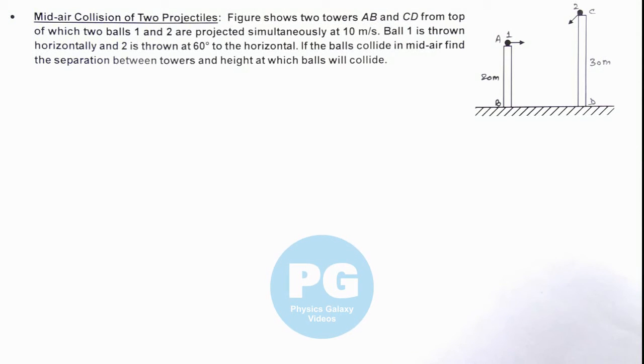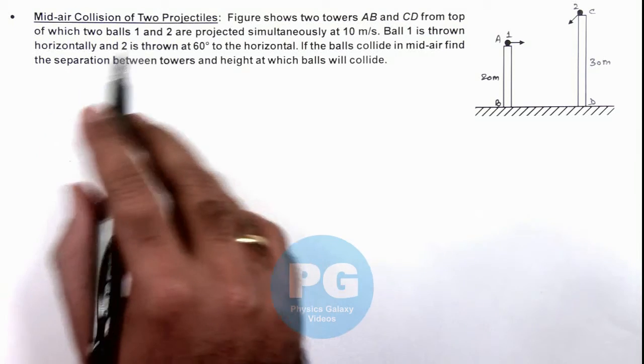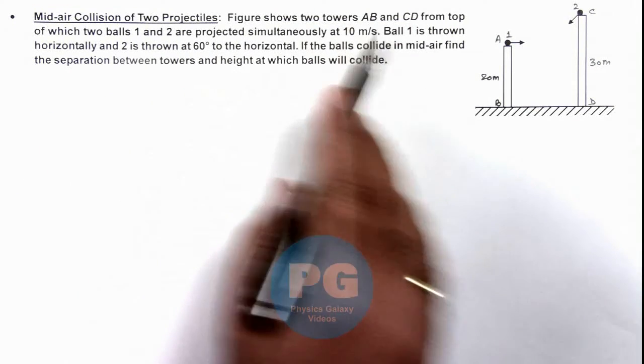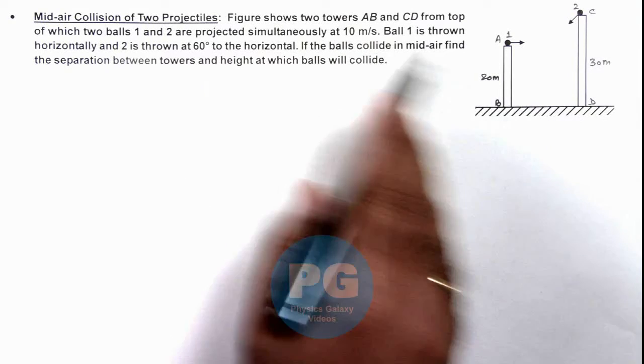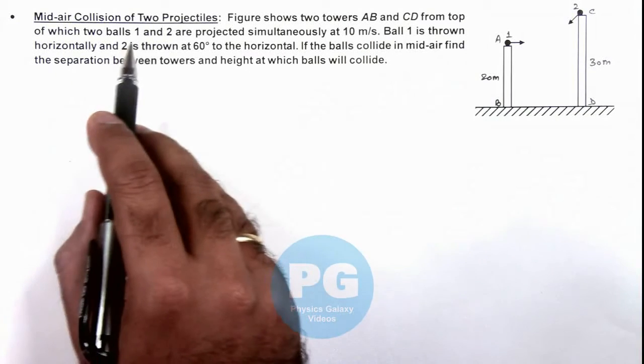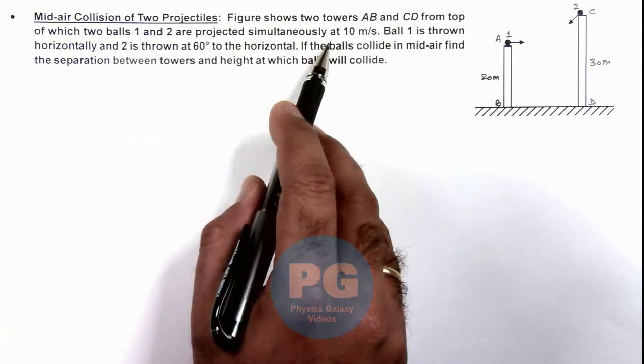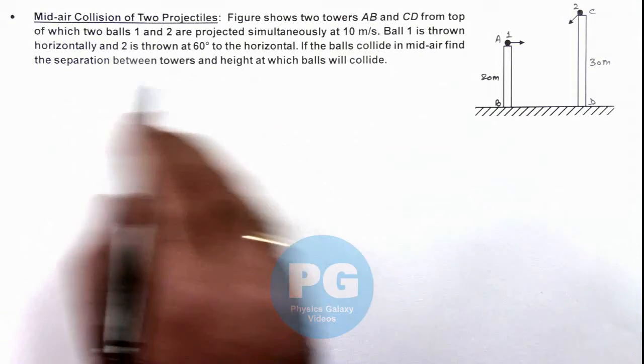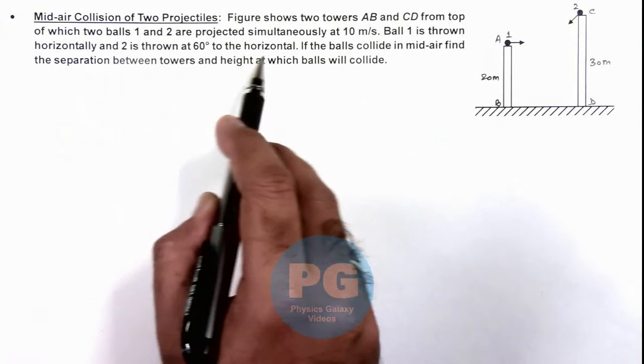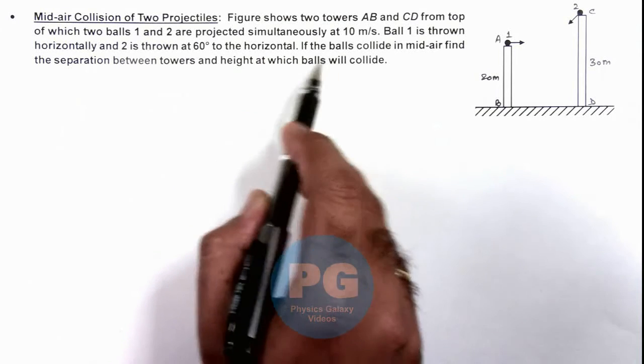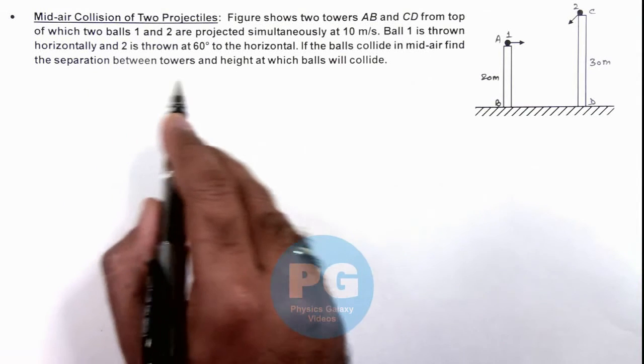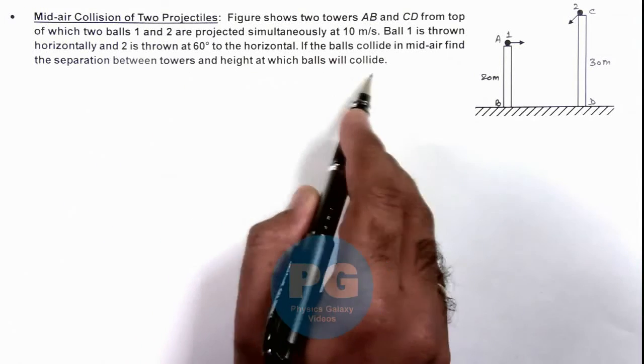In this illustration we'll discuss the mid-air collision of two projectiles. The figure shows two towers AB and CD, from the top of which two balls 1 and 2 are projected simultaneously at 10 meters per second. Ball 1 is thrown horizontally and ball 2 is thrown at 60 degrees to the horizontal. If the balls collide in mid-air, we are required to find the separation between towers and height at which the balls will collide.